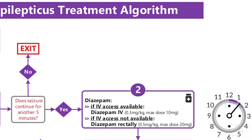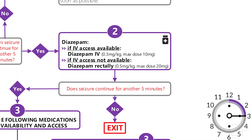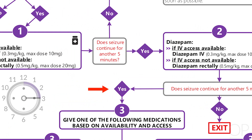If the seizure continues for five minutes since the first dose of diazepam, you should administer a second dose of diazepam at the same dosing, either intravenous or rectally depending on the available access. If another five minutes passes and the patient is still seizing after two doses of diazepam, it is time to try a different type of medication.